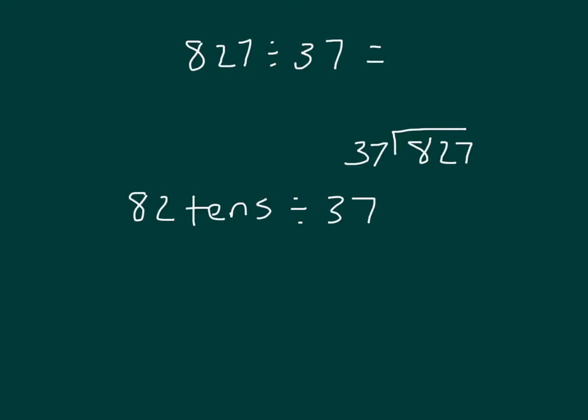And in this case, we can, because 37 can go into 82. An estimate would help us. So 37 is close to 40, and if we count by multiples of 40, 40, 80, that would be 80 tens divided by 40. 80 divided by 40 is 2, and we're talking about tens, so that would be 2 tens.